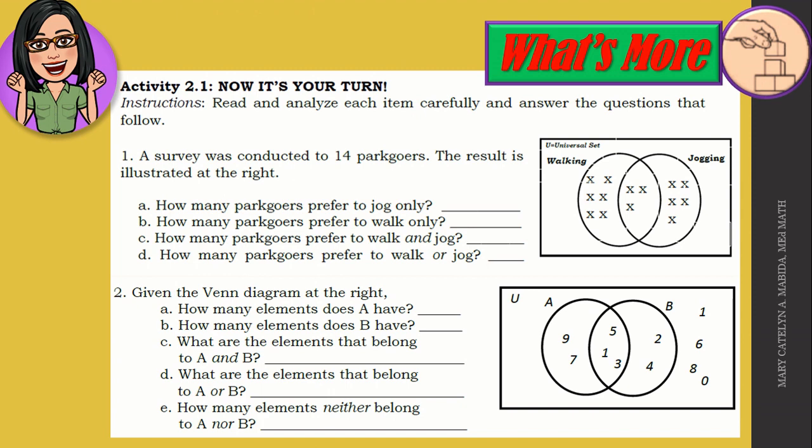Activity 2.1. Now it's your turn. Read and analyze each item carefully and answer the questions that follow. A survey was conducted to 14 park goers. The result is illustrated at the right, here. Answer the following. How many park goers prefer to jog only? How many park goers prefer to walk only? What about park goers prefer to jog and walk? And how many park goers prefer to jog or walk? Number two. Given the Venn diagram at the right, how many elements does set A have? What about set B? What are the elements that belong to both A and B? And what about elements that belong to A or B? How about elements that do not belong to A nor B?